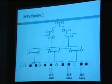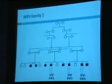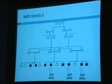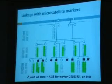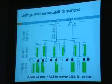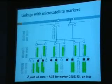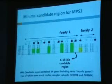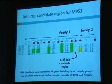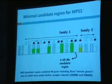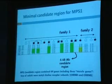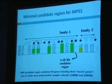Our introduction to this disorder was when we ascertained a large consanguineous family from Saudi Arabia. We obtained samples and undertook a genome-wide SNP analysis. We identified homozygous regions and then used microsatellite markers to type the family further, finding a significant LOD score within the family at a region on chromosome 2.